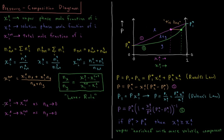A few more ideas: the mole fraction of i in the gas approaches the total mole fraction of i as the number of moles of liquid goes to zero — as everything becomes gas, the gas mole fraction equals the total. Similarly, the mole fraction of i in the liquid approaches the total mole fraction as the number of moles of gas goes to zero.